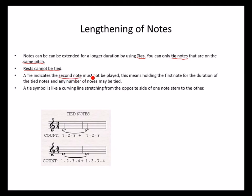The second note must not be played, meaning you hold the first note for the duration of the tied notes. Any number of notes can be tied. The tie symbol is like a curving line stretching from one note to the other.